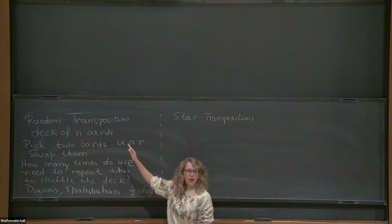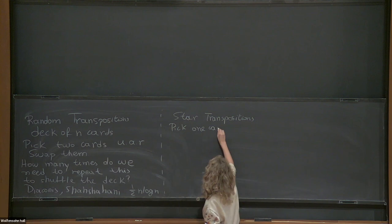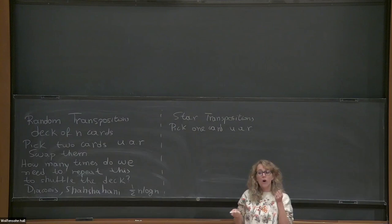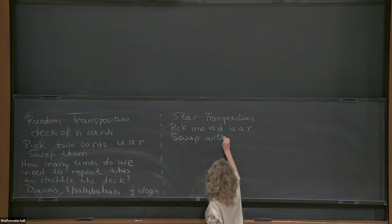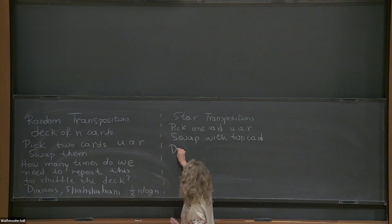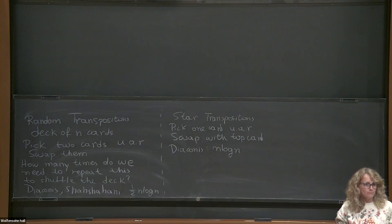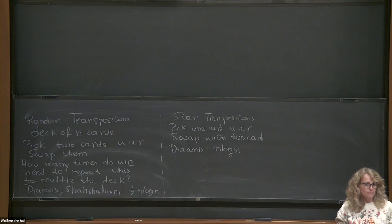The second model is star transpositions, which is the interchange process on the star graph. We have a deck of n cards, and what we do is pick one card uniformly at random and swap it with the top card. Using the work of Flatto, Konheim, and Wales, it takes n log n steps to shuffle this, and we have another technique using representation theory to diagonalize this model.